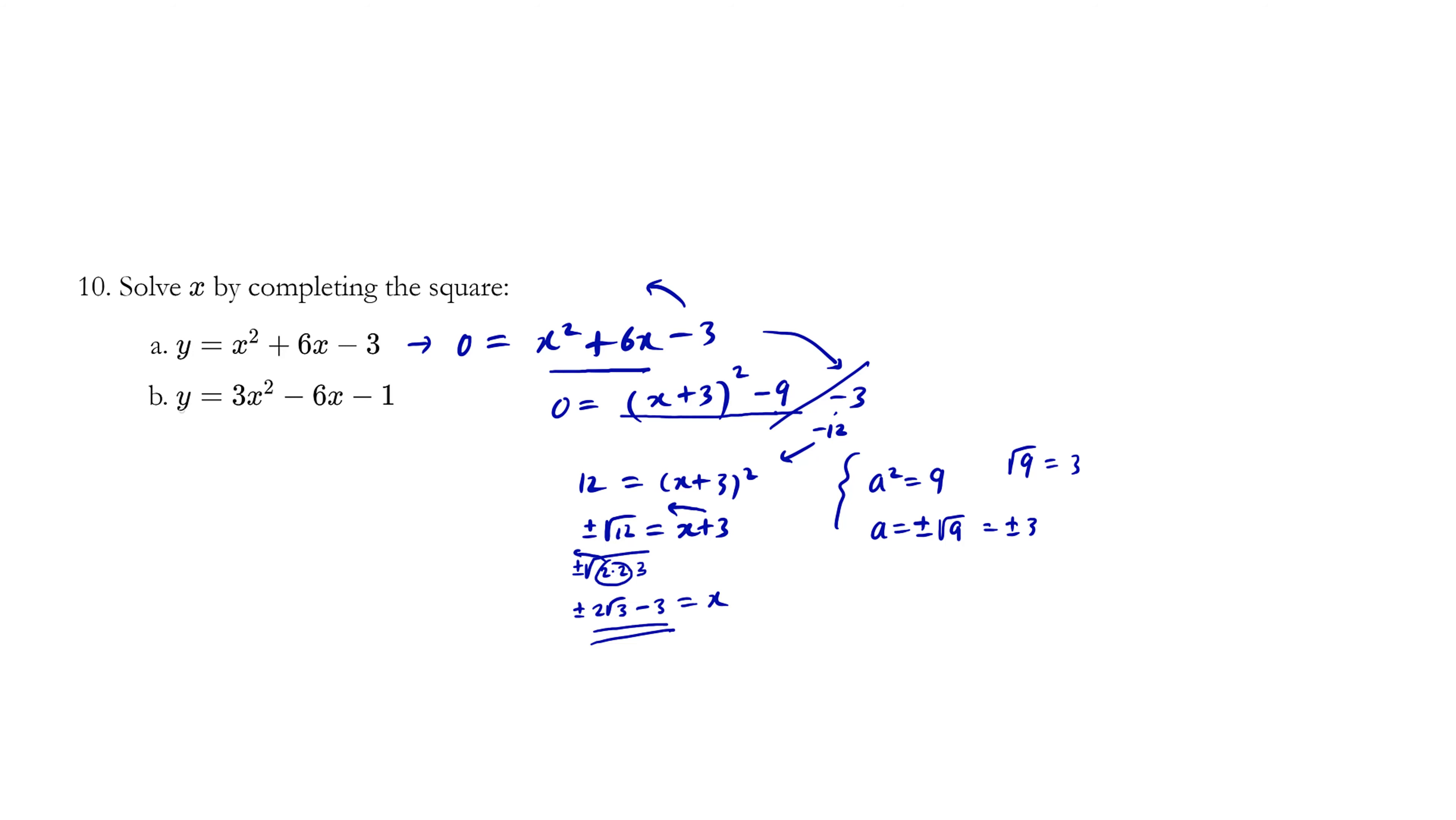Alright, let's set y equals 0 to solve by completing the square here. We're going to aggressively throw the negative one over. So we have 1 is equals to this part here. And we can aggressively factor out the 3. So we have 3x squared minus 2x.